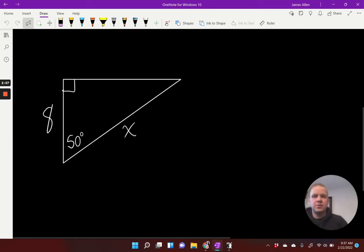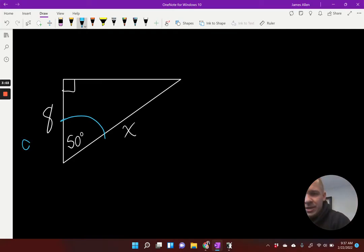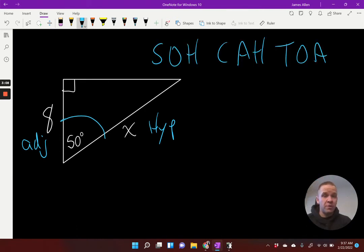One more situation with solving for sides. So here, once again, I've got my angle, which is 50 degrees. Next to that would be my adjacent and here's my hypotenuse. So now with adjacent hypotenuse, which trig function am I using? Cosine is the trig function. So I'd have cosine of my angle, which is 50 degrees, equals my adjacent, which is 8, over my hypotenuse, which is x.